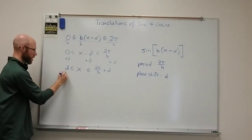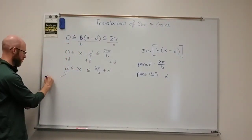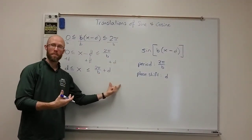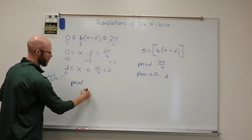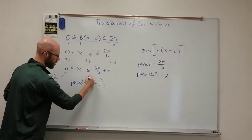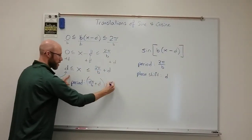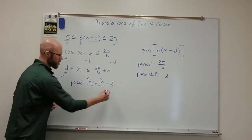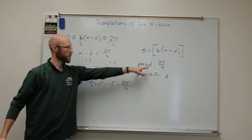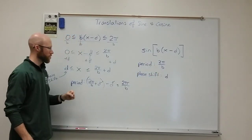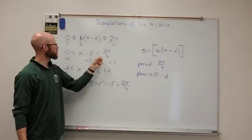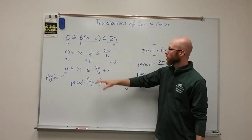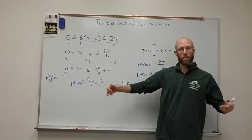The phase shift is d — just as stated. The period is found by subtracting the endpoints: (2π/b + d) − d = 2π/b. The d's cancel out, leaving exactly 2π/b — confirming what I said. So the phase shift equals d and the period equals 2π/b when the argument is in factored form. This is a nice shortcut so you can avoid going through the inequality to find the endpoints.